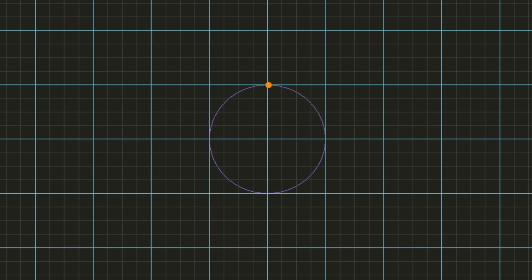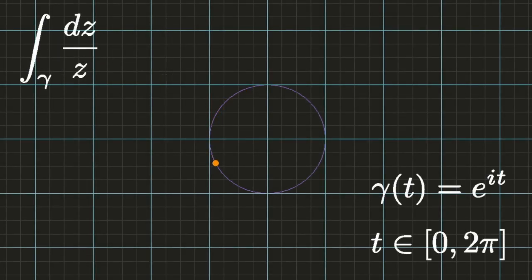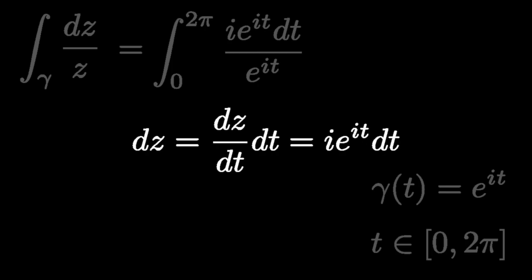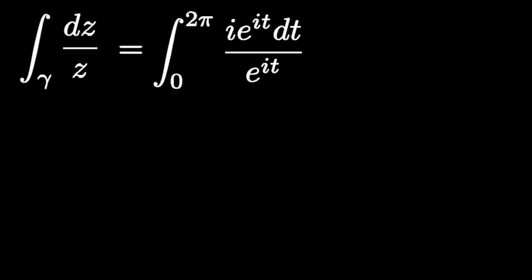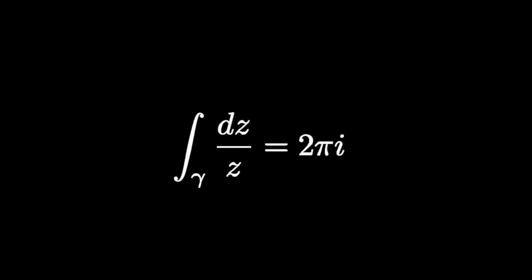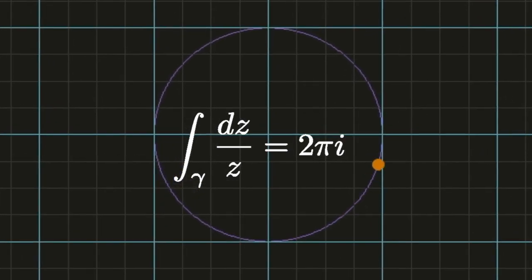As a final example, consider the function f of z equals 1 over z, and let's integrate dz over z along the boundary of a unit circle centered at the origin. Writing out the differential dz in terms of the curve gamma, we find that dz equals i e to the i t dt. Substituting this value for dz and gamma of t for z, and canceling like terms, we arrive at the integral of dt from 0 to 2 pi, giving a final result of 2 pi i. This shows that not all complex functions yield 0 when integrated along a closed curve, and although this example is very simple, it lies at the heart of complex analysis.